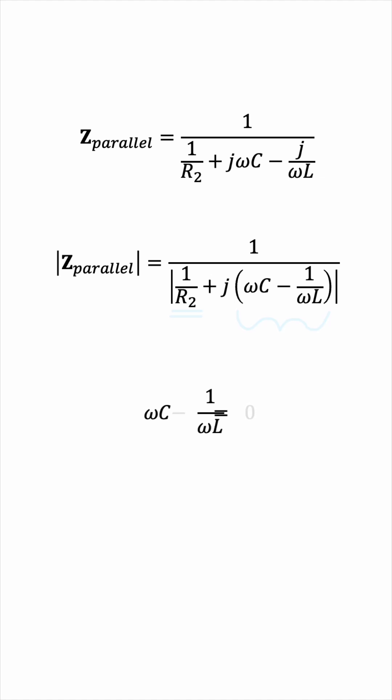We can take 1 over omega L to the other side, multiply, giving us omega squared LC equals 1, divide by LC, giving us omega equals 1 over the square root of LC.